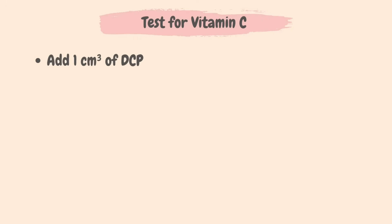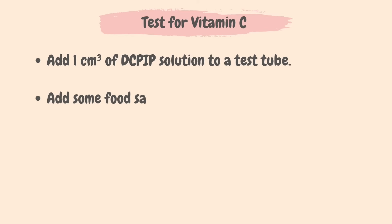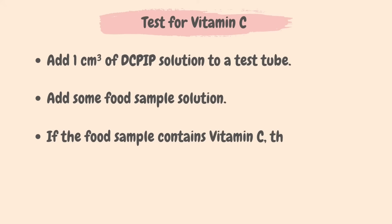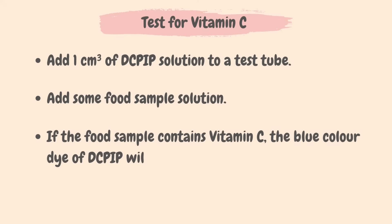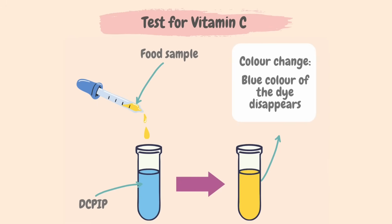The final food test is for vitamin C. Add one cubic centimeter of DCPIP solution to a test tube — DCPIP is blue in color. Then add a small amount of the food sample as a solution. A positive test will show the blue color of the dye disappearing and turning colorless, confirming the food sample contains vitamin C.